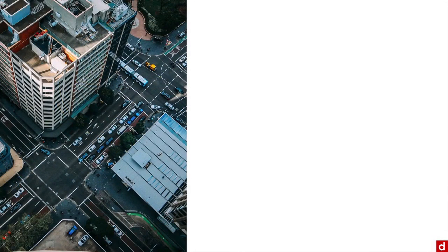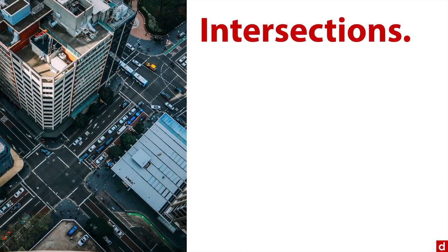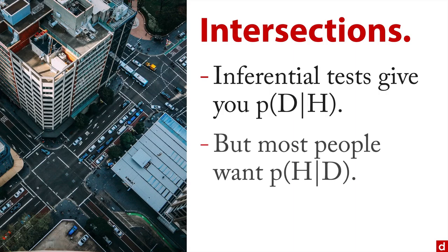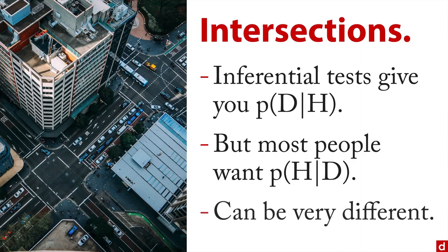You can also think of it in terms of intersections. Standard inferential tests and calculations give you the probability of the data — that's our D — given the hypothesis. So if you assume a null hypothesis is true, this will give you the probability of the data arising by chance. The trick is most people actually want the opposite of that: the probability of the hypothesis given the data. And unfortunately, those two things can be very different in many circumstances.